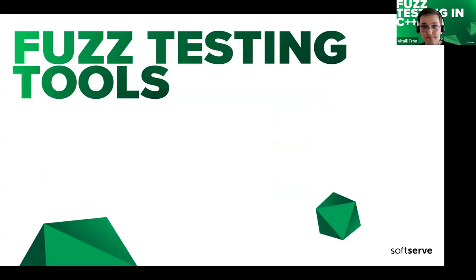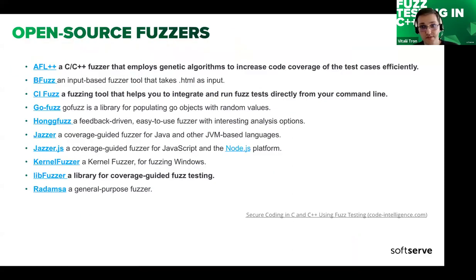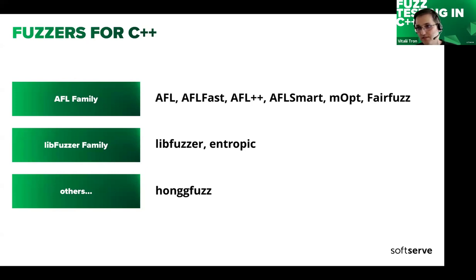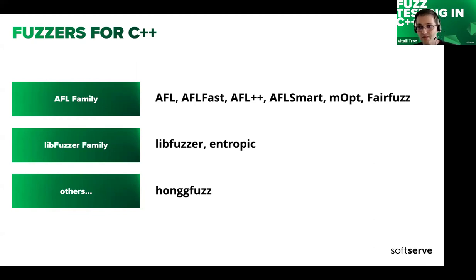Let's proceed with fast testing tools and look at the practical aspects. There are a great number of fuzzers, and among the most widely used open source ones — not only for C++ but also for Golang, JavaScript, and others — we have AFL++, libFuzzer, Entropic fuzzer, and HongFuzz, the most popular among others, developed by Google.